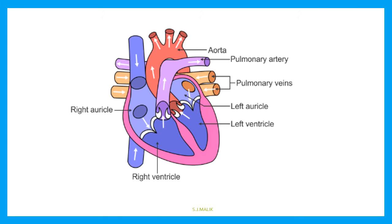Before going to describe excretion, let me tell you a very important thing. In the last session I told you the working of the human heart. I forgot to tell you about two very important points when we discussed about artery and vein. I told you that arteries carry pure blood from the human heart to parts of the body, and veins carry deoxygenated blood back to the heart. But see here — there is the pulmonary artery, and it is carrying impure blood from the human heart to the lungs.